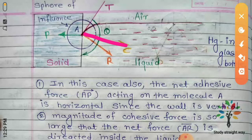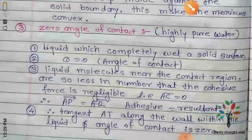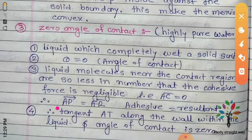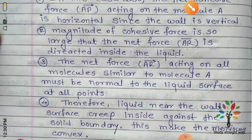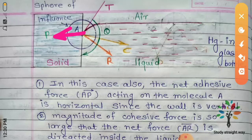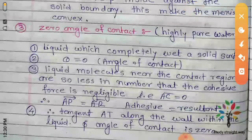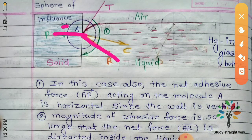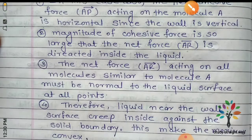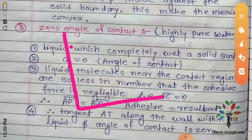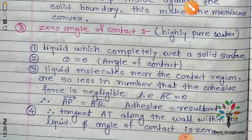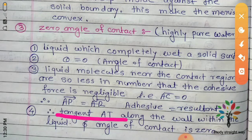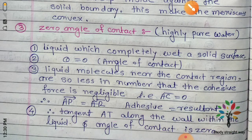The tangent lies along the wall within the liquid and the angle of contact is zero. The same case is number 4. The angle of contact is 90 degrees. Whatever the angle of contact is 90 degrees, that gives the condition of 90-degree contact — balancing convexity and concavity. This is the sphere of influence. This is a hypothetical question — a hypothesis of how the 90-degree case works. This is clear glass.